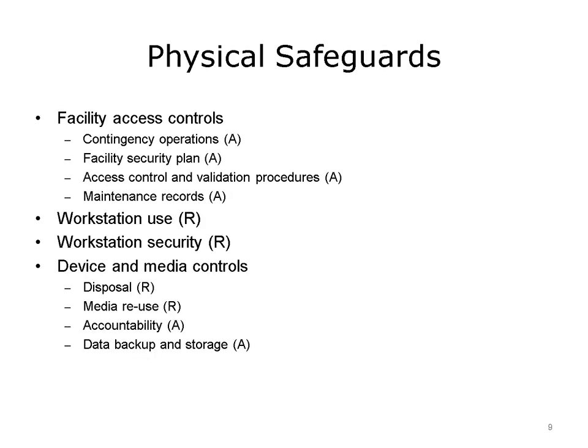The second category of safeguards is physical safeguards. Access to the facility is addressable, so the facility must have a security plan with contingency operations, maintenance records, and other controls. The facility includes the data center location and associated hardware, software, and network access points, as well as physical access controls. There are requirements for workstation use, physical security of the workstation, and dealing with devices and media. There are explicit regulations for how media containing PHI is disposed of or reused, as well as addressable issues on accountability for media and its backup and storage. The secure use of various types of mobile devices must also be addressed.